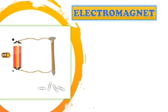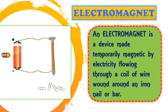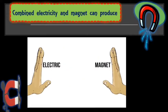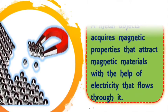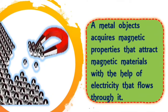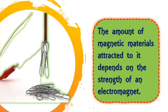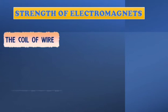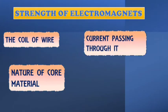How does electromagnet works? So, an electromagnet is a device made temporarily magnetic by electricity flowing through a coil of wire wound around an iron nail or bar. Combined electricity and magnet can produce what you call electromagnet. A metal object acquires magnetic properties that attract magnetic materials with the help of electricity that flows through it. The amount of magnetic materials attracted to it depends on the strength of an electromagnet. The strength of an electromagnet varies depending on the factors involving. Just like the coil of wire, nature of core material, current passing through it, and size of the wire.